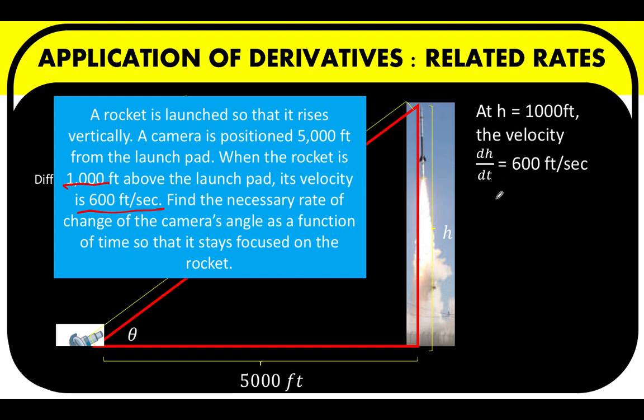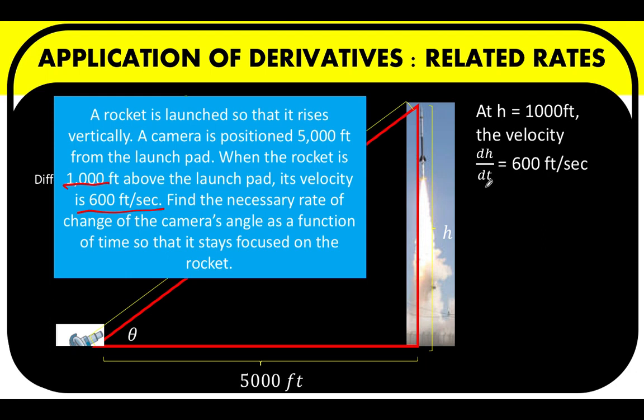Or the change in height with respect to the infinitesimal change in time. Now since we have here a right triangle, we can now use the Pythagorean theorem in order to find the value of c. The hypotenuse is equal to the square root of the sum of the squares of the two legs. Here, this distance is 5,000 feet and the height is 1,000 feet when the velocity is 600 feet per second. So whatever value for c that we'll compute here, that is the length of this hypotenuse at that specific point when the velocity of the rocket is 600 feet per second.